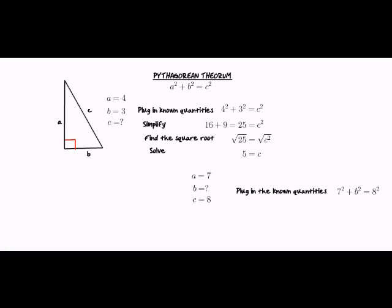We're going to simplify. We get 49 plus B squared equals 64, and we subtract 49 from each side to get B squared is equal to 15 to isolate the unknown variable. And we take the square root of B squared to get us plain B, and the square root of 15 equals approximately 3.87, so we get that side B equals approximately 3.87.